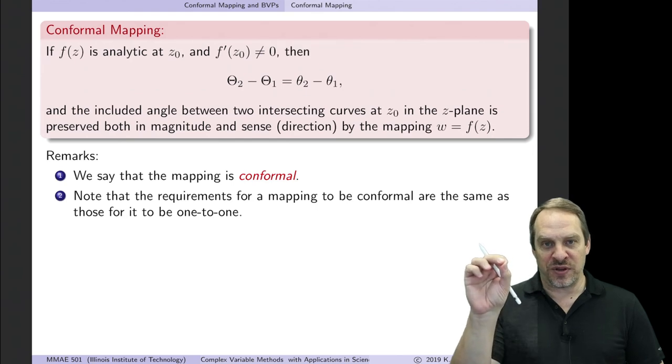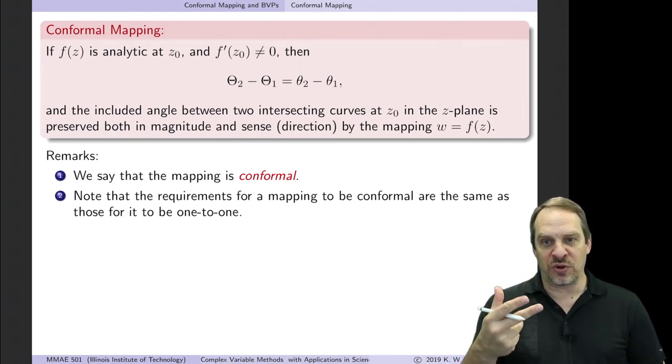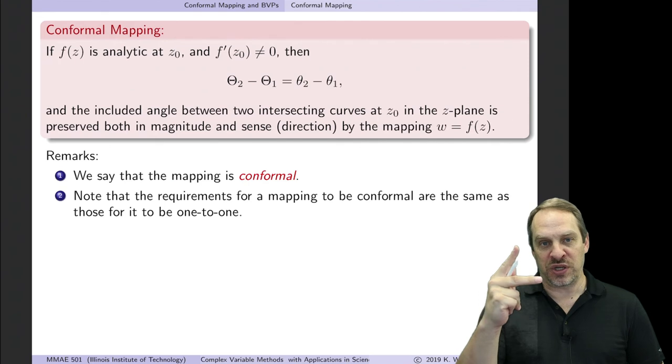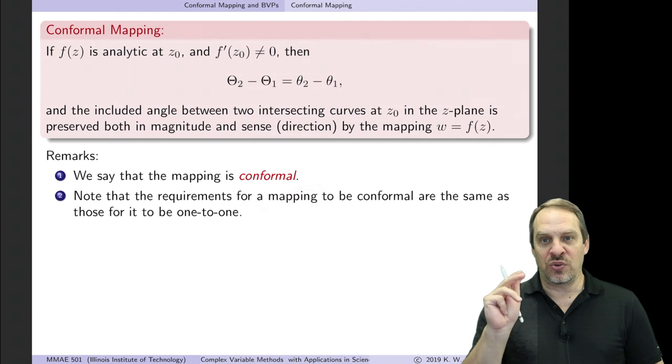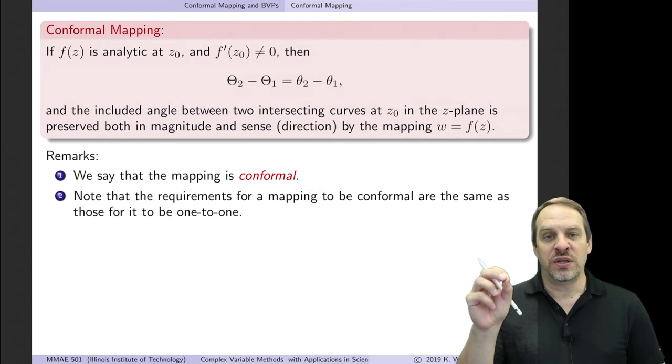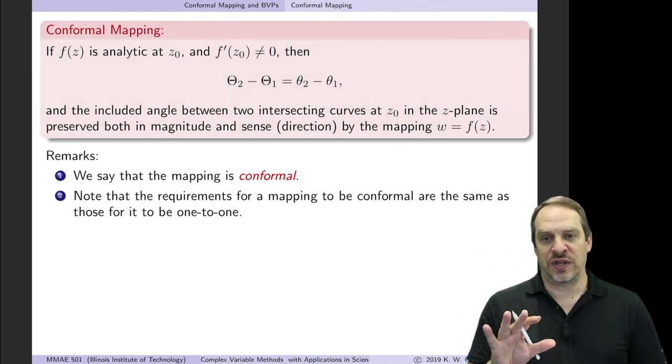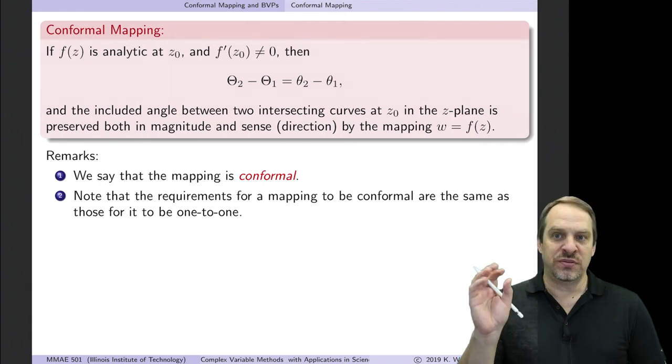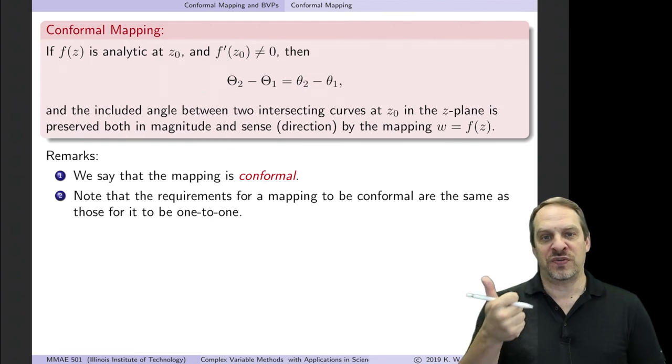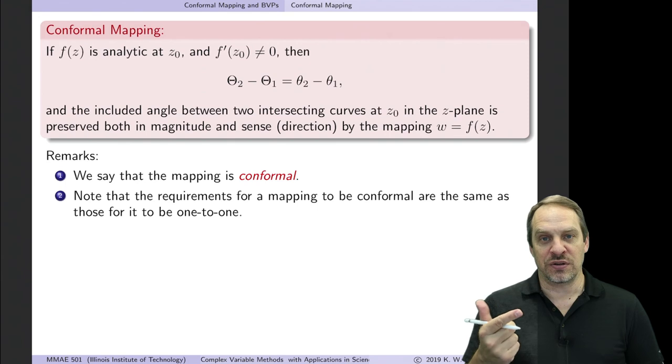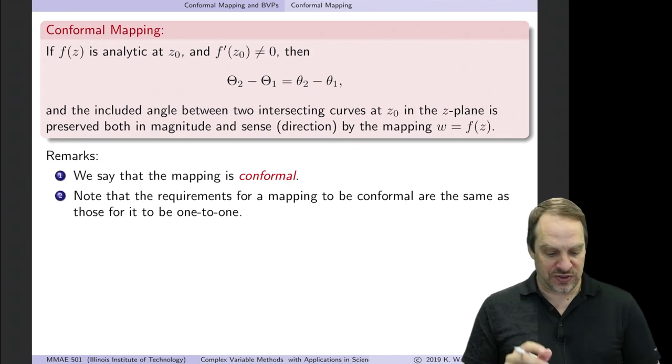So again, one-to-one is a property of points and their image points. A mapping being conformal, that's a property of the angle between two curves. Now the great thing here is you'll notice that the requirements for a mapping to be one-to-one and for it to be conformal are precisely the same. So if a mapping is one-to-one, it's conformal. If it's conformal, it's one-to-one. Cauchy-Riemann equations have to be satisfied. It has to be analytic and f prime of zero has to be non-zero. So this is great. We couldn't have asked for a better result. We asked two questions and the mathematical requirement for both is precisely the same.